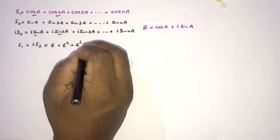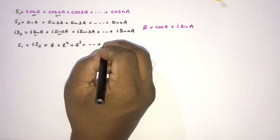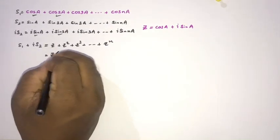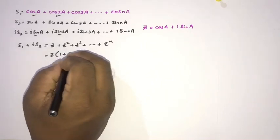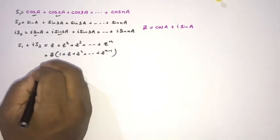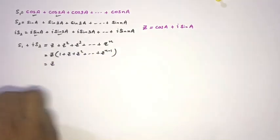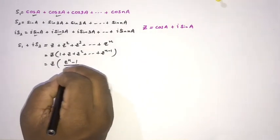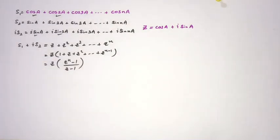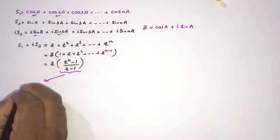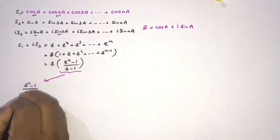Similarly we can write c³ for the next term, up to the last term c^n. Now we can take c as a common factor, giving us c·(1 + c + c² + ... + c^(n-1)). This is a geometric series and the sum equals c·(c^n - 1)/(c - 1).